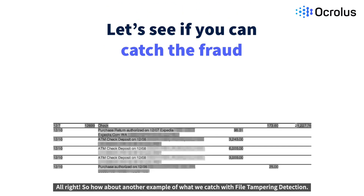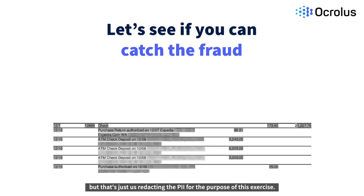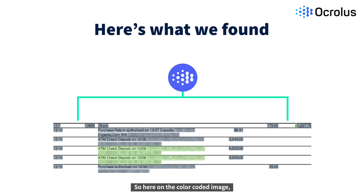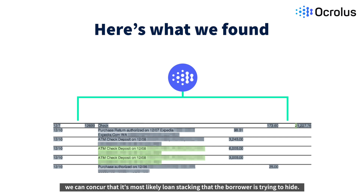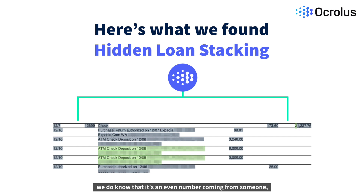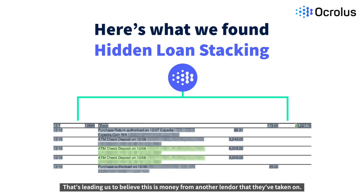Here's another example of what we catch with file tampering detection. The blurred part of the description is just us redacting the PII for the purpose of this exercise. On the color-coded image, we can concur that it's most likely loan stacking that the borrower is trying to hide. While we're not 100% sure what the original text said, we do know it's an even number coming from someone they do not want to disclose to the lender, leading us to believe this is money from another lender that they've taken on.